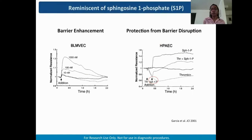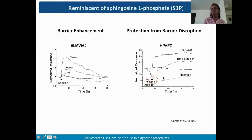The phenotypes we saw with barrier-protective kinase inhibitors are similar to what has been described for sphingosine-1-phosphate. S1P shows dose-dependent barrier strengthening, and when applied to thrombin-treated cells, almost immediately blunts thrombin-induced barrier disruption and leads to faster recovery. Sphingosine-1-phosphate was explored as a therapeutic but wasn't successful due to adverse side effects. Perhaps our kinase inhibitors might perform better in vivo.